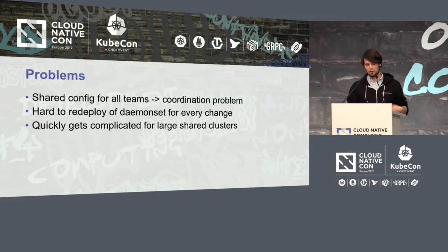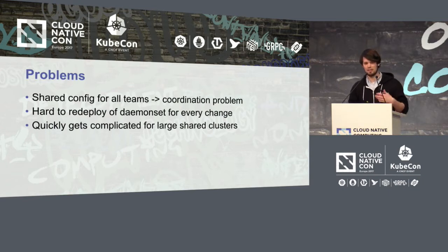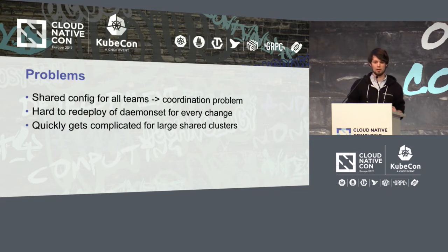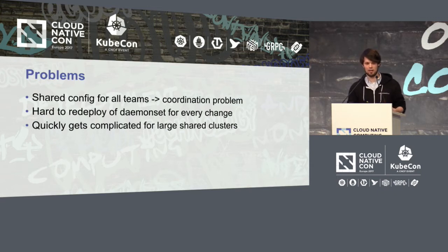This is fine if you're in a single cluster with one team, but if you have a cluster with multiple teams — for example, like 20 teams — and everyone shares the global config of Fluentd, this can be quite a problem because you have a coordination problem and every team updates one part of the config. The whole daemon set has to be redeployed. Overall, if you have a shared cluster, this can really get complicated quickly.